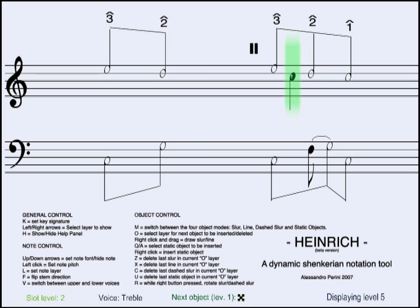We can draw the so-called unfolding by means of the line object. These new lines are on level 2, since we pressed the O key to select the appropriate insertion level for objects.